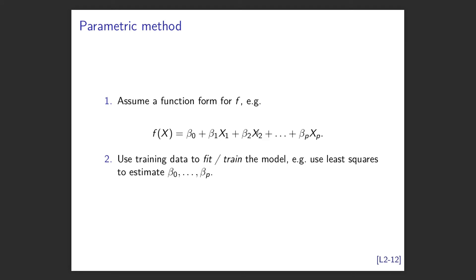We can split machine learning into parametric or non-parametric methods. You already know the t-test is parametric and Kruskal-Wallis is non-parametric. A parametric method assumes some functional form of f - the classic one is a linear relationship. You're saying f(x) is a linear combination of your features with some coefficients describing that relationship. Then we use training data to fit the model, typically using least squares.